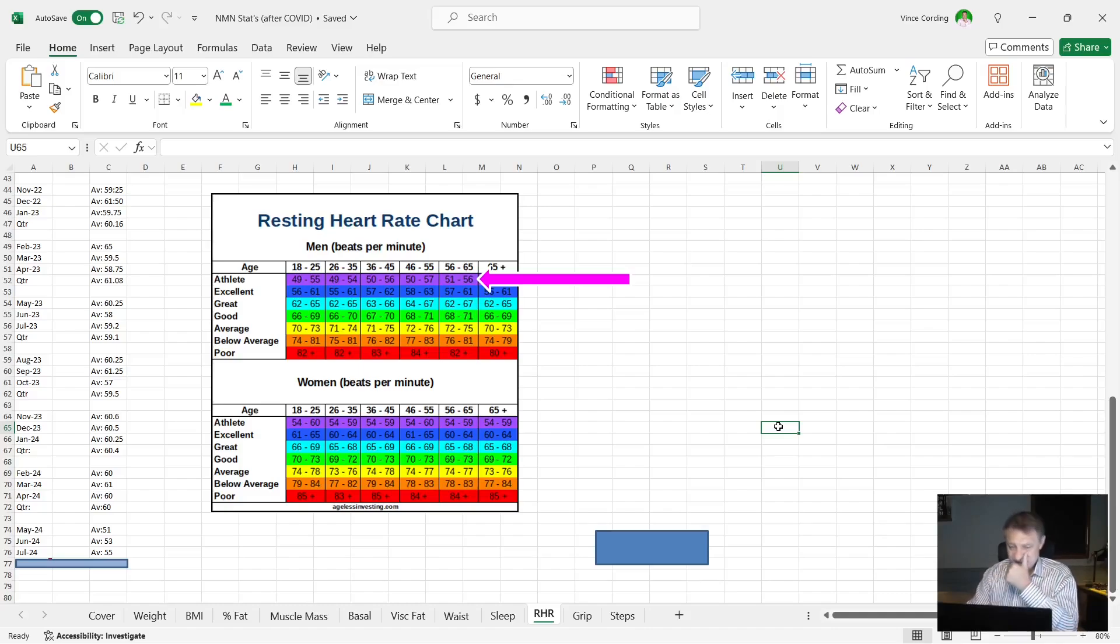That's down considerably because I'm now getting all my stats from my Ultrahuman ring. So I'm not sure if the Mi Band 8 is more accurate or the Ultrahuman ring is more accurate, but the average for that quarter gives my resting heart rate at 53. Now if you look at the chart here, 53 for a 60 year old has now got me in the athletic group. So that's good. I'm happy with that.